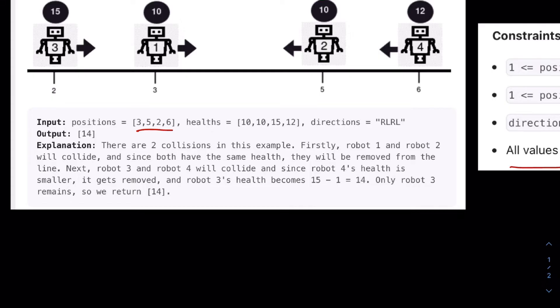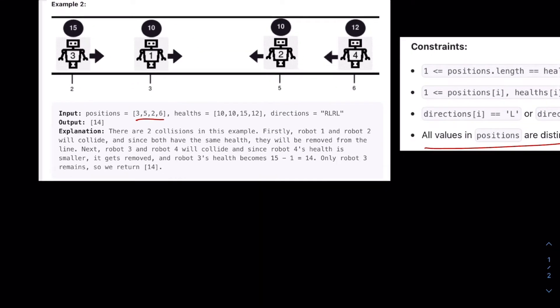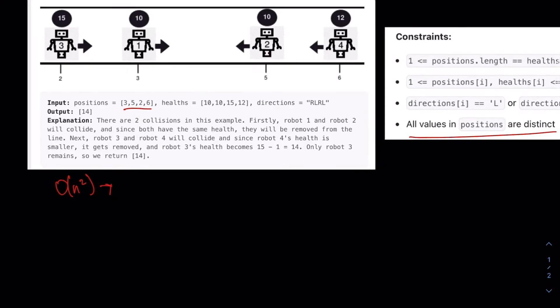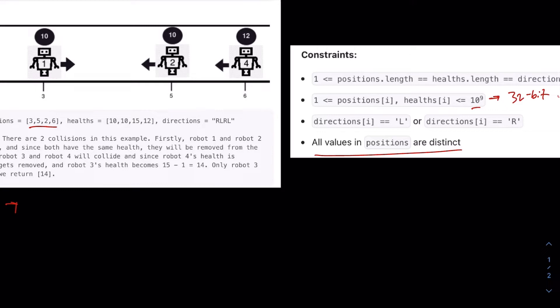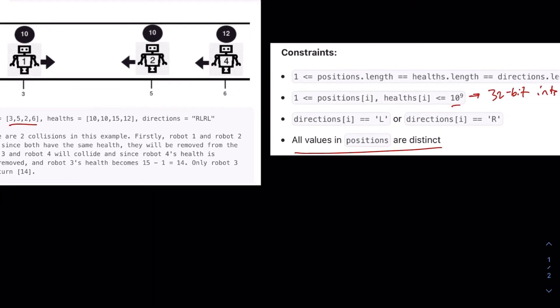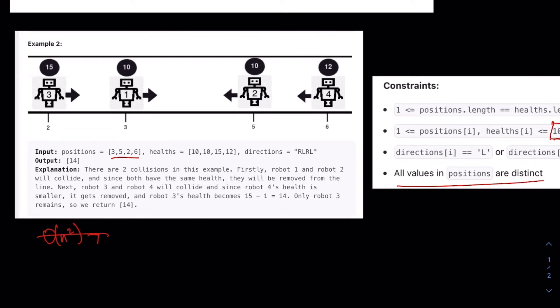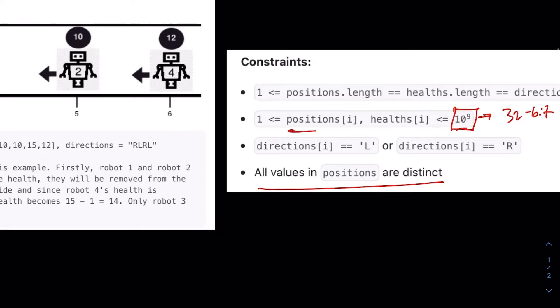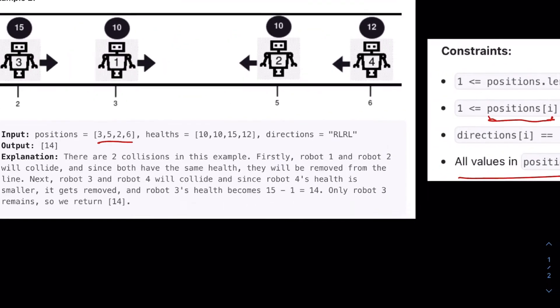However, the runtime of this will most likely end up O of N squared, because what we would ultimately have to do is, let's say our number line, worst case, our number line is of length 10 to the 9. So it's not just O of N squared. Because these positions can go all the way up to 10 to the 9.